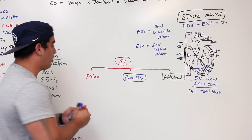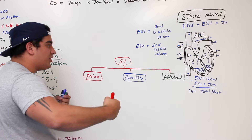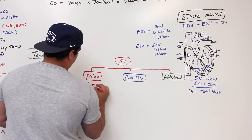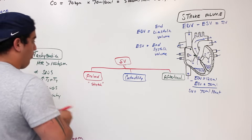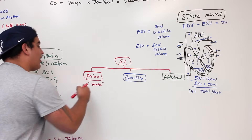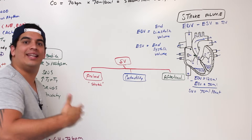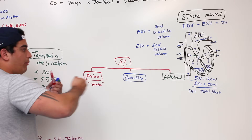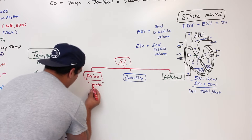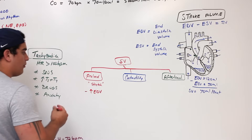Preload is basically the degree of stretch of the cardiac muscle — how much the myocardium stretches when being filled with blood. The more stretch, the more preload; the less stretch, the less preload. To stretch the heart, you need a lot of volume — the EDV. The more EDV, the more it pushes on the heart walls, stretching them and increasing preload.